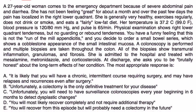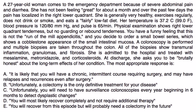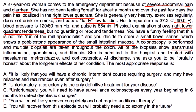Clinical vignette two: A 27-year-old woman comes to the ED with severe abdominal pain and diarrhea for about a month, with pain now localized to the right lower quadrant. Temperature is 99°F; vital signs are otherwise normal. Right lower quadrant tenderness without guarding or rebound is found. A small bowel series shows cobblestone appearance of the mucosa. Colonoscopy biopsies show transmural inflammation, granulomas, and fibrosis. She is admitted and treated with mesalamine and metronidazole.